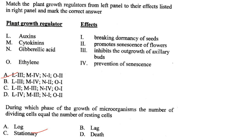Match plant growth regulators with their effects. Auxins inhibit outgrowth of axillary buds — L3. Cytokinins: prevention of senescence. Gibberellic acid: breaking dormancy of seeds. Ethylene: promotes senescence of flowers. Answer is option A.